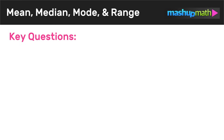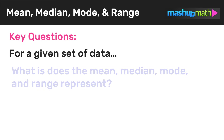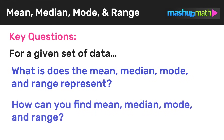So let's start out by looking at two key questions. For a given set of data, what does the mean, median, mode, and range represent? And how can you find mean, median, mode, and range?